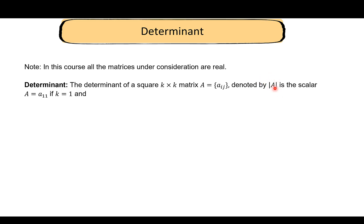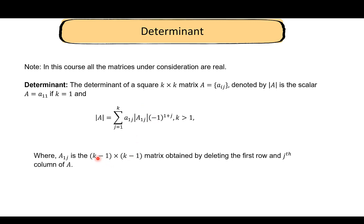If k is equal to 1, the determinant of A is just a_11, its only element. If k is greater than 1, the determinant is given by a sum over j from 1 to k. The capital A_1j is a (k−1) by (k−1) matrix obtained by deleting the first row and the j-th column of A.